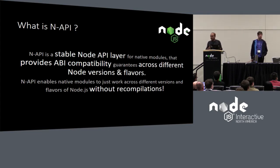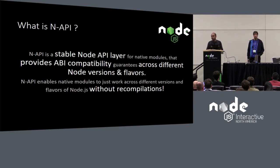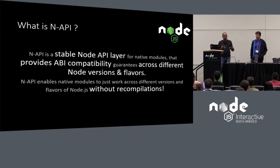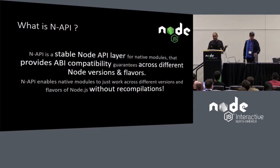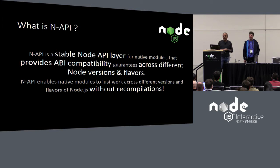Today, due to the lack of ABI compatibility in Node, the module ecosystem suffers from breakage with every new Node release. Native modules have to get updated or recompiled for each new version. According to some estimates, around 30% of the module ecosystem gets broken or impacted by this lack of stability.